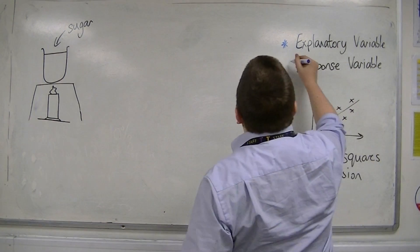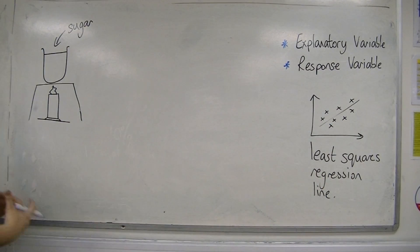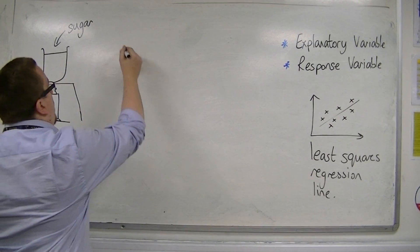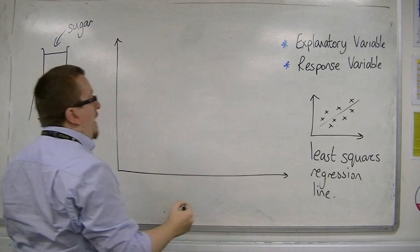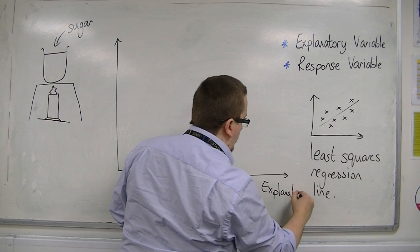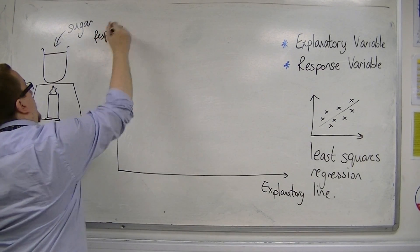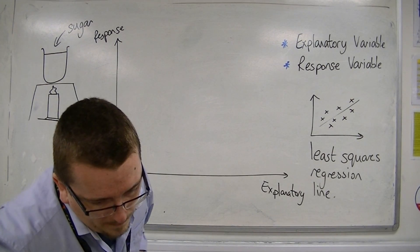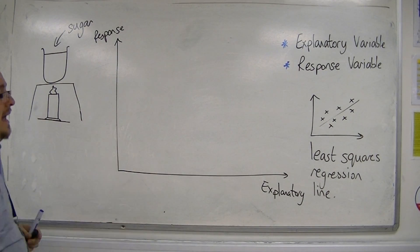So, the actual response that you get is known as the response variable. And traditionally, in the way that we draw it, and when we plot our graph, is that the explanatory variable goes along the bottom, and the response is on the vertical. So, that's traditionally how it is drawn.